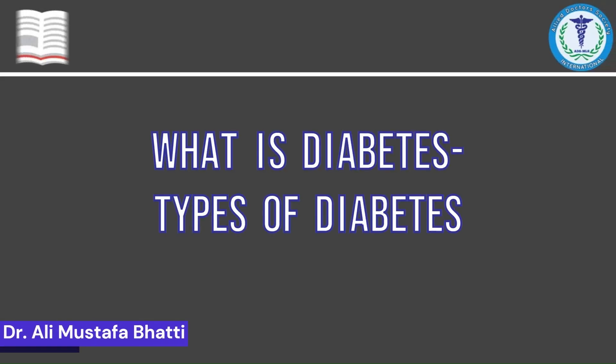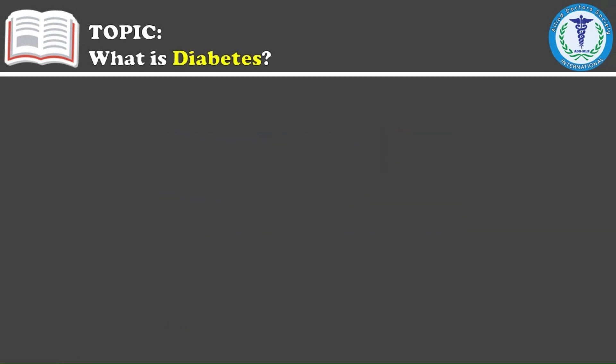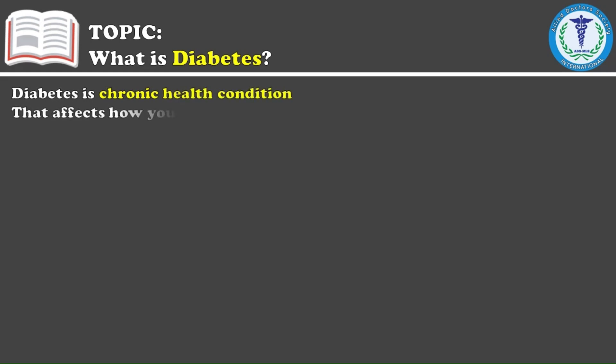Today we will learn about diabetes — what it is and how many types there are. Diabetes is a deadly disease, and if the amount of sugar in the body is high, it can lead to death.